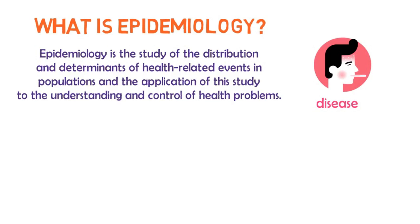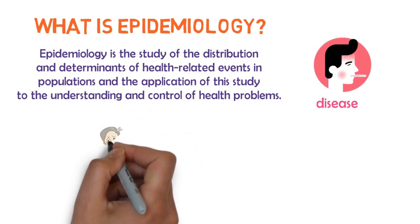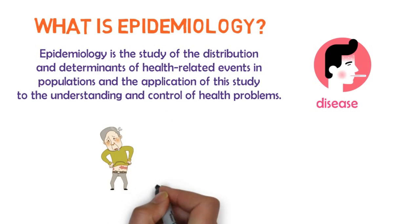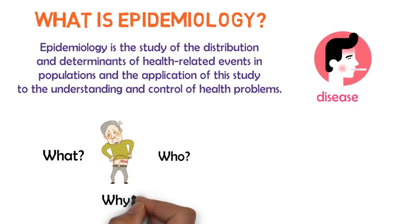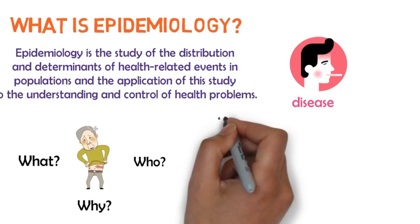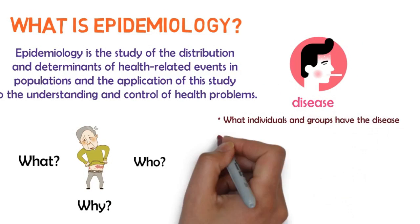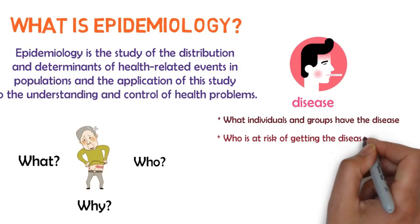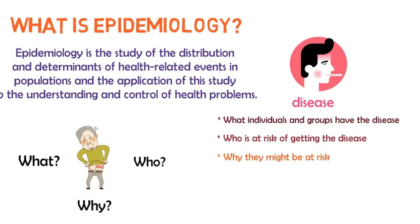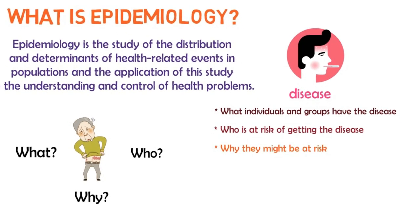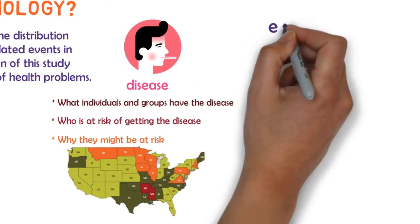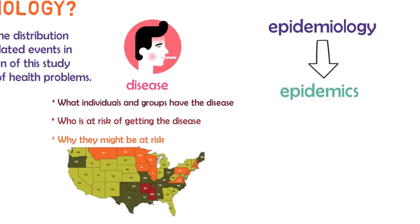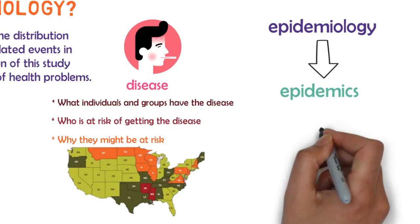A common example of a health-related event is disease. When individuals in a population are coming down with, say, measles, epidemiologists are concerned with establishing the what, the who, and the why questions: what individuals and groups have the disease, who is at risk of getting the disease, and why they might be at risk. It is hoped that this knowledge will enable health officials to understand how to control outbreaks of the disease.